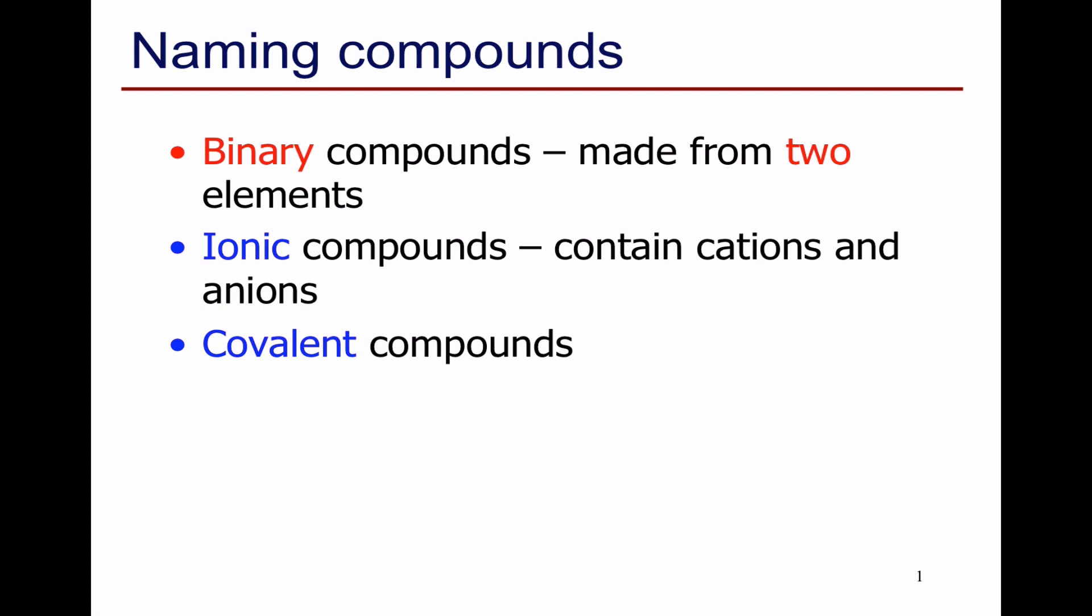In this video, we're going to quickly go over how to name binary compounds, that is compounds made from two elements. These can either be ionic and contain cations and anions, or covalent and contain covalent bonds between the atoms.